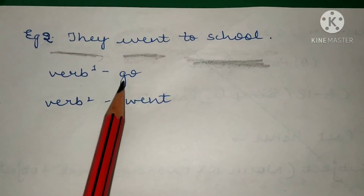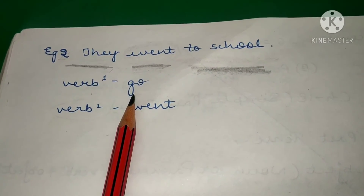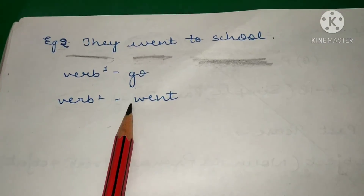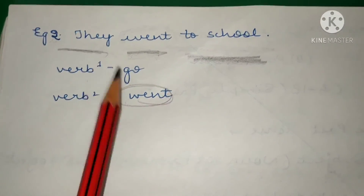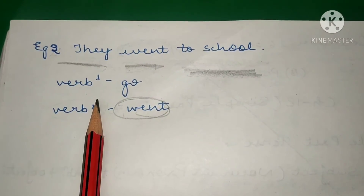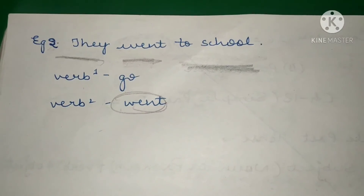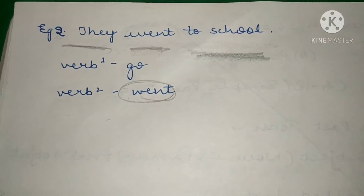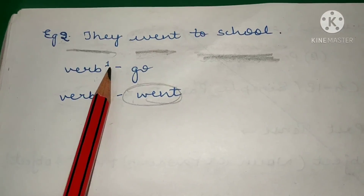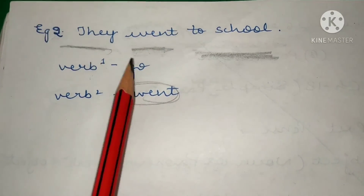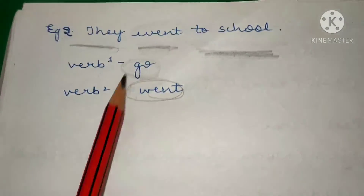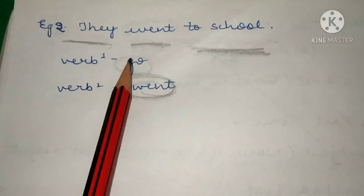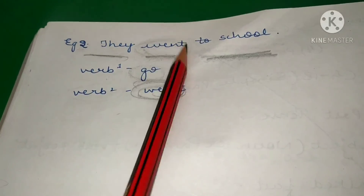Verb ki first form hoti hai 'go,' and verb ki second form — that is past tense — is 'went.' When we talk about Simple Past Tense, we have to use verb ki second form. In present tense we use 'go,' but when we talk about past tense, verb ki second form 'went' is what we use.